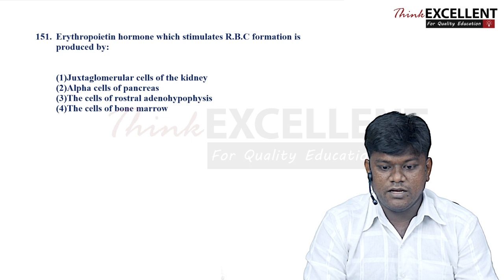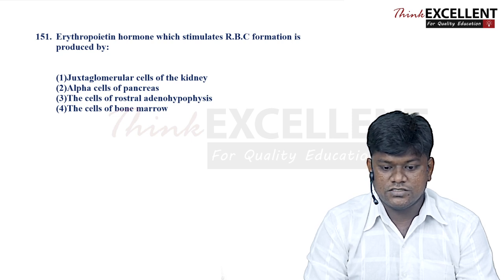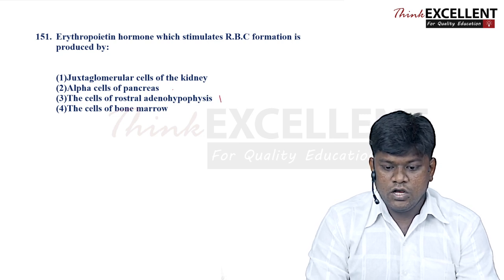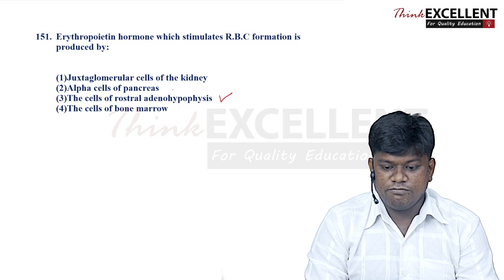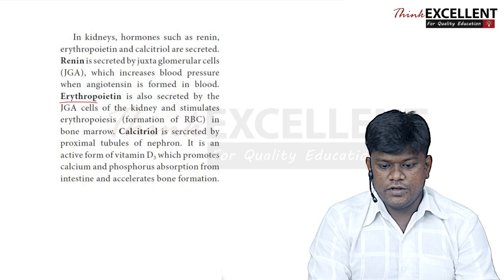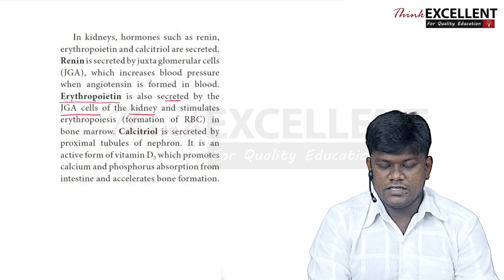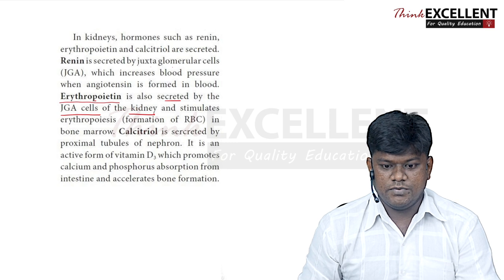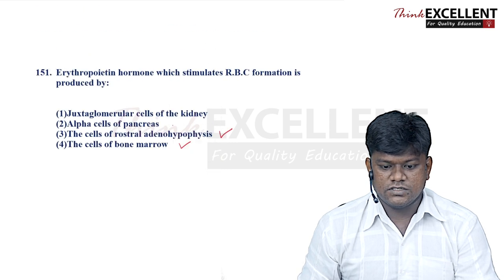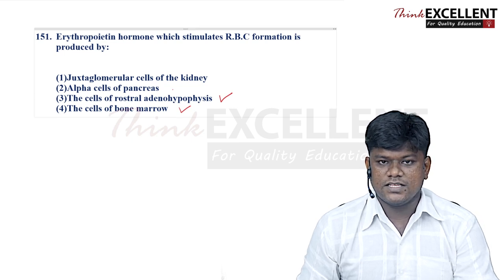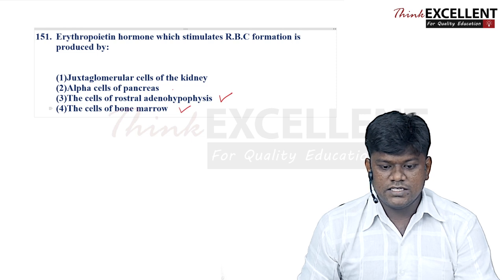The options are: juxtaglomerular cells of the kidney, alpha cells of the pancreas, alpha cells of the adenohypophysis, and cells of bone marrow. Erythropoietin is also secreted by JGA cells — this evidence is present in the state board syllabus. So the right answer is option 1: juxtaglomerular cells of the kidney.